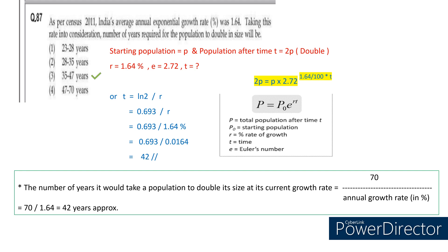If you take the initial population as P, the population after T will become 2P. Substituting values in the formula: 2P equals P multiplied by e (2.72) to the power of R, which is 1.64 divided by 100, multiplied by T. This is difficult to calculate in an exam, so we have a shorter version of this formula: T is equal to natural log of 2 divided by R, or T equals 0.693 divided by R. So you can directly start from 0.693 divided by R, which is given as 1.64%, or 0.0164. So 0.693 divided by 0.0164 equals approximately 42 years.